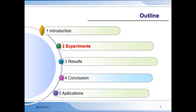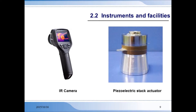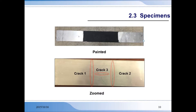Next, we will cover the experiment. The experimental setup consists of primarily three parts: the vibration/ultrasonic excitation equipment, the IR camera, and the computer. The excitation equipment includes the signal generator, piezo driver, and piezoelectric actuator. Shown are the IR camera and the piezoelectric stack actuator used for the experiments. The specimen used in the experiment is an aluminum bar with three cracks. Cracks one and two are vertical, whereas crack three is horizontal.